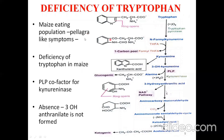Tryptophan deficiency occurs in people whose staple diet is maize, which is deficient in tryptophan, causing pellagra-like symptoms. This results in niacin deficiency, and the patient presents with the three D's: diarrhea, dementia, and dermatitis.